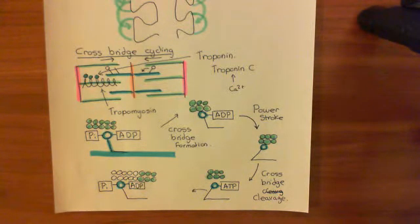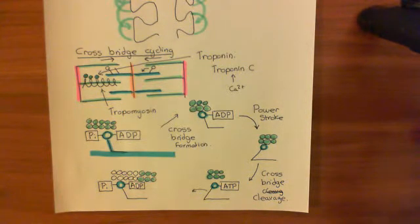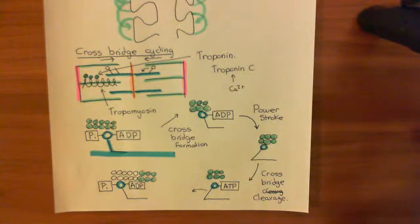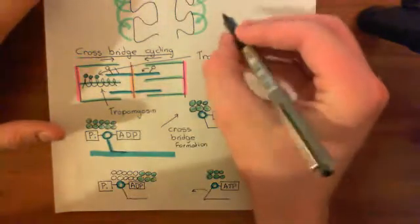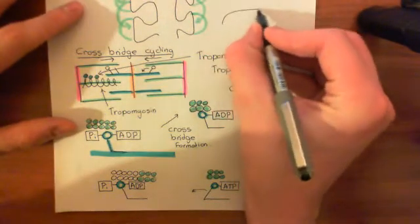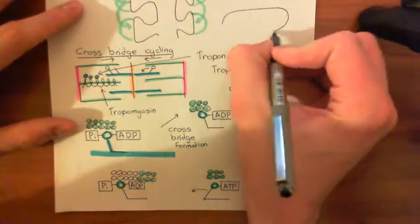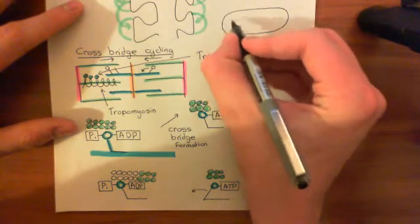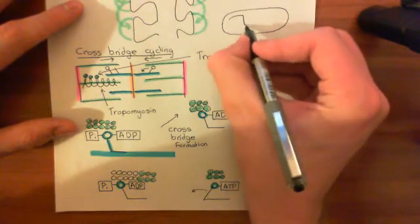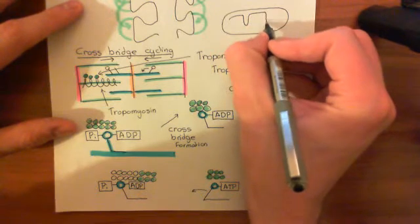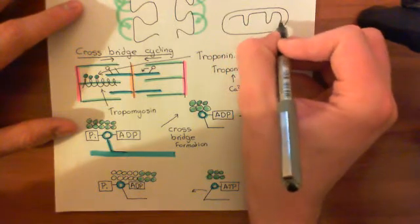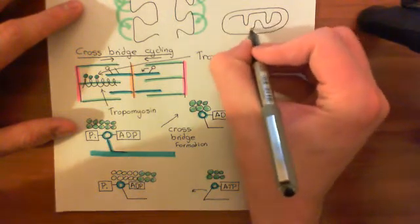We've discussed how the calcium signal is going to cause the sarcomeres within the cardiomyocyte to start contracting, which is going to cause the whole cardiomyocyte to start contracting in length. Now there's another thing that the calcium signal does, and that is that it acts on the mitochondria within the cardiomyocyte.